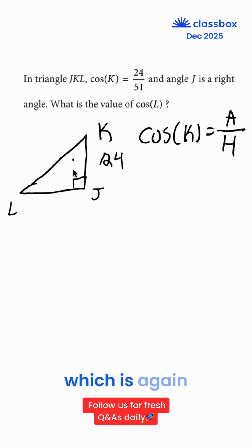And our hypotenuse, which is opposite of the right angle, would be 51. Why is this our adjacent? Because it's the one closest to our K. This would be our opposite.